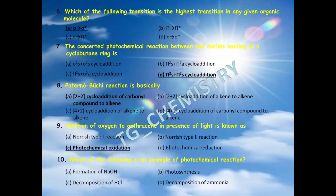Tenth question: which of the following is an example of a photochemical reaction? Options are: A) formation of NOH, B) photosynthesis, C) decomposition of HCl, D) decomposition of ammonia. Among the four options, option B is the right answer — photosynthesis is an example of a photochemical reaction.